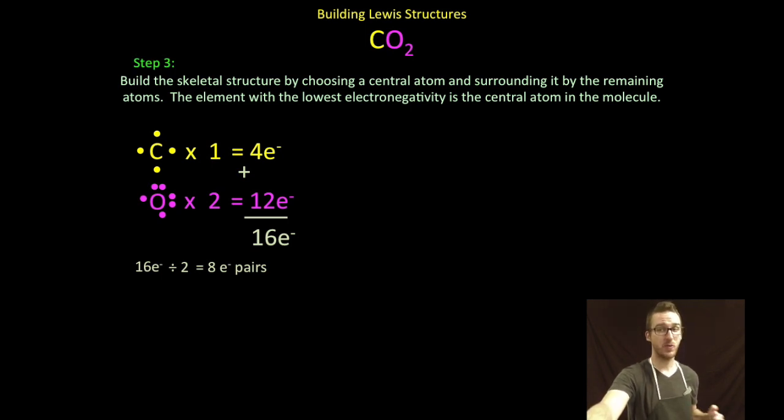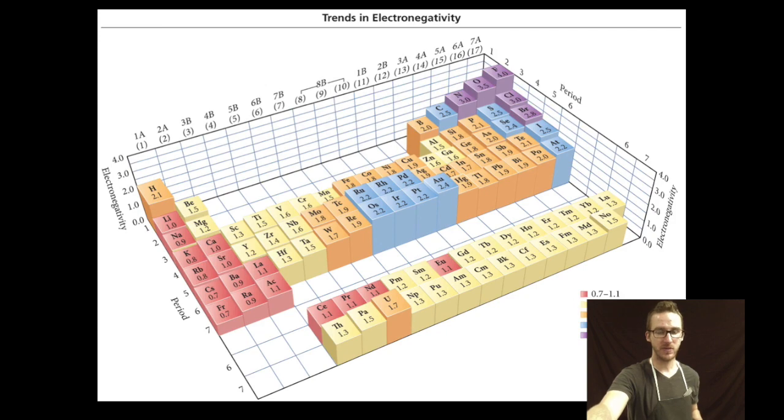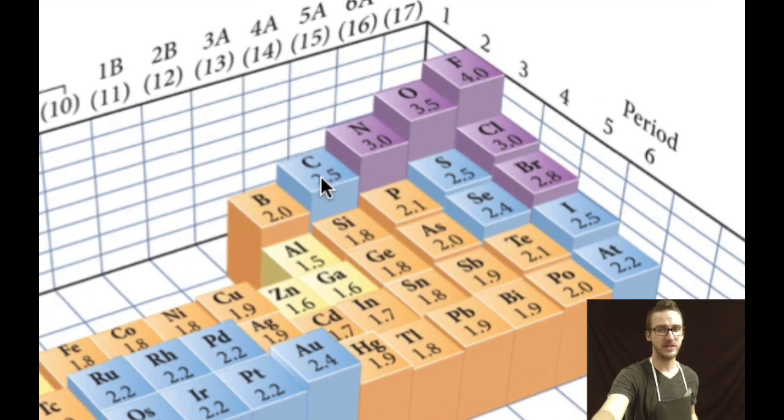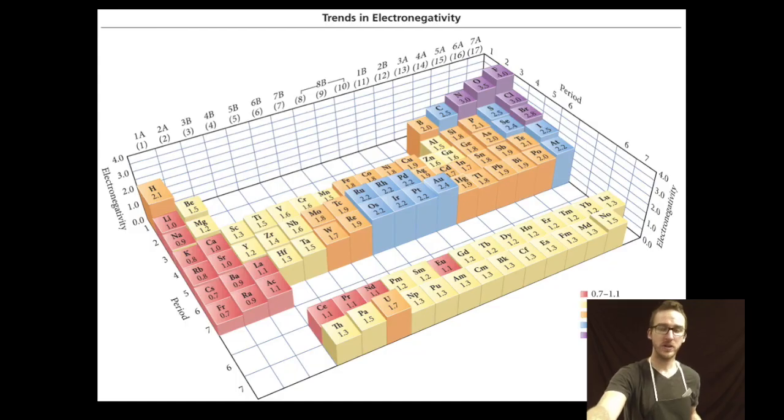Step 3: build a skeletal structure by choosing a central atom and surrounding it by the remaining atoms. Remember your element with the lowest electronegativity is going to be your central atom. This time it's a little trickier because I don't have hydrogen. I go to my periodic table and compare electronegativities of carbon and oxygen. Carbon is the less electronegative.